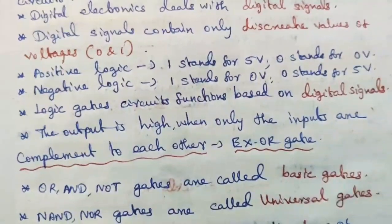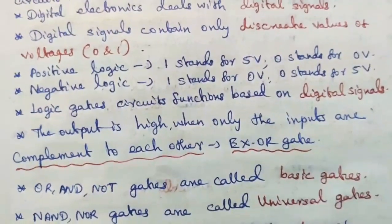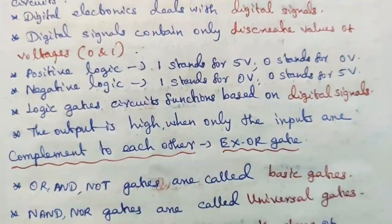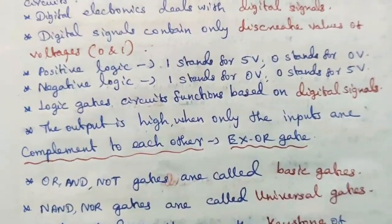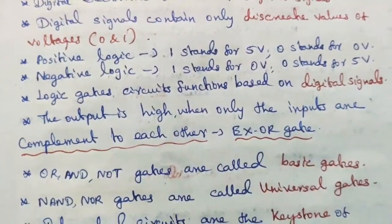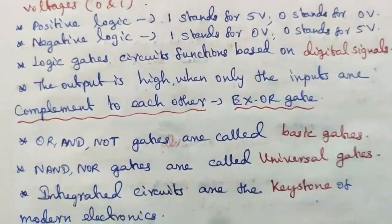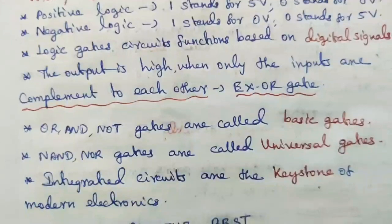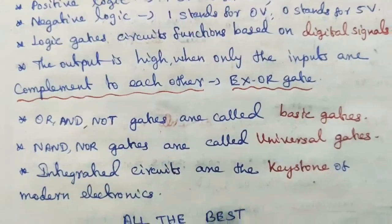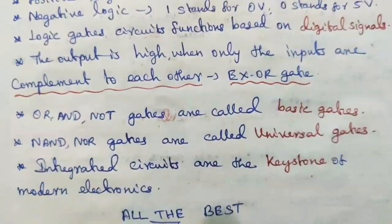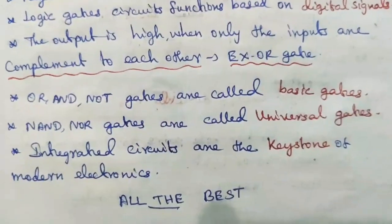Logic gates are circuits that function based on digital signals. The output is high when only the inputs are complement to each other - this is the result of XOR gate. OR, AND, and NOT gates are called basic gates. NAND and NOR gates are called universal gates. Integrated circuits are the keystone of modern electronics.